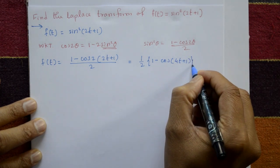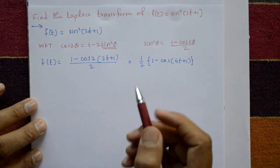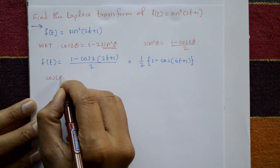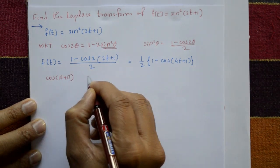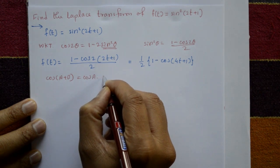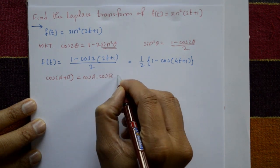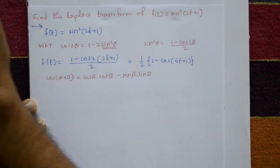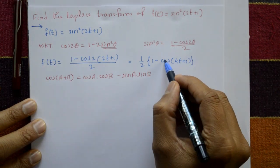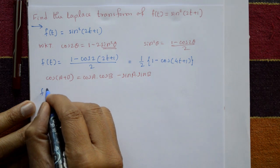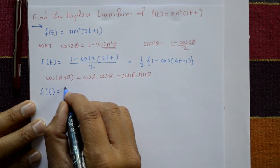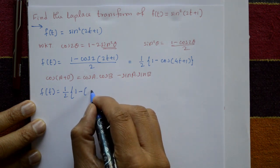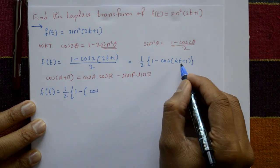Now we apply the standard formula cos(A + B) = cosA·cosB - sinA·sinB to expand the second term. Using this standard formula, f(t) = (1/2) times 1 minus the expansion of cos(4t + 2).